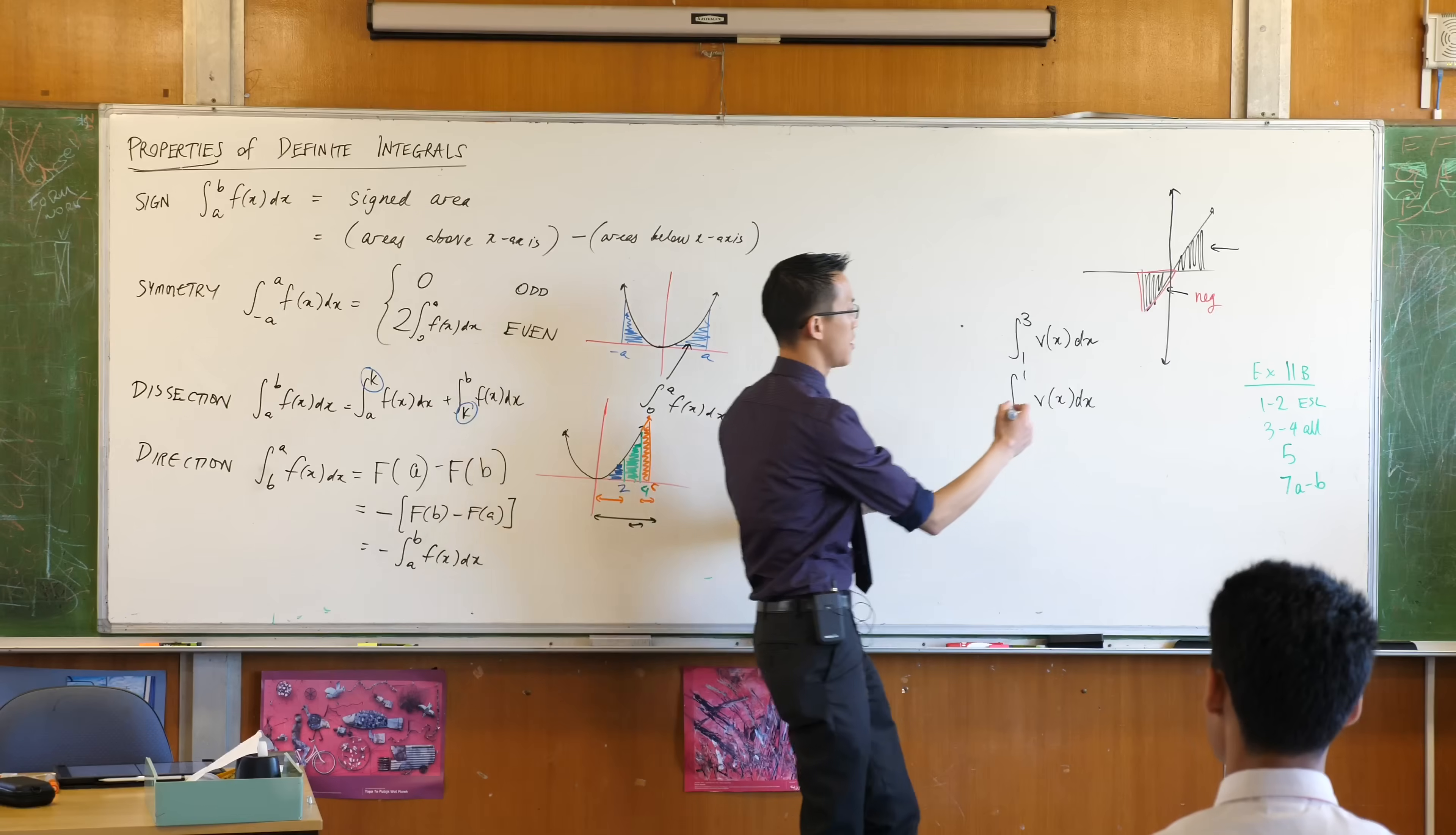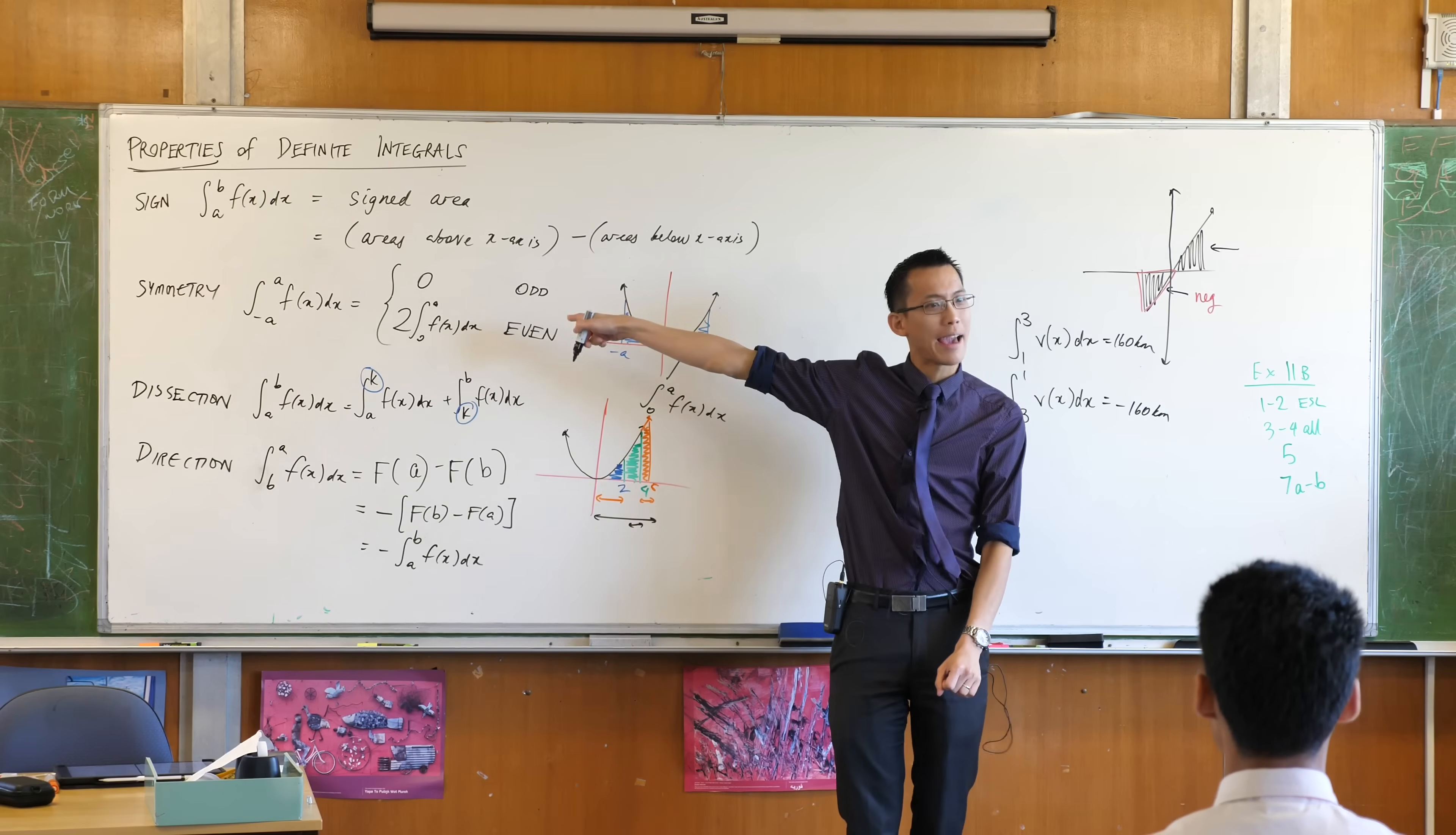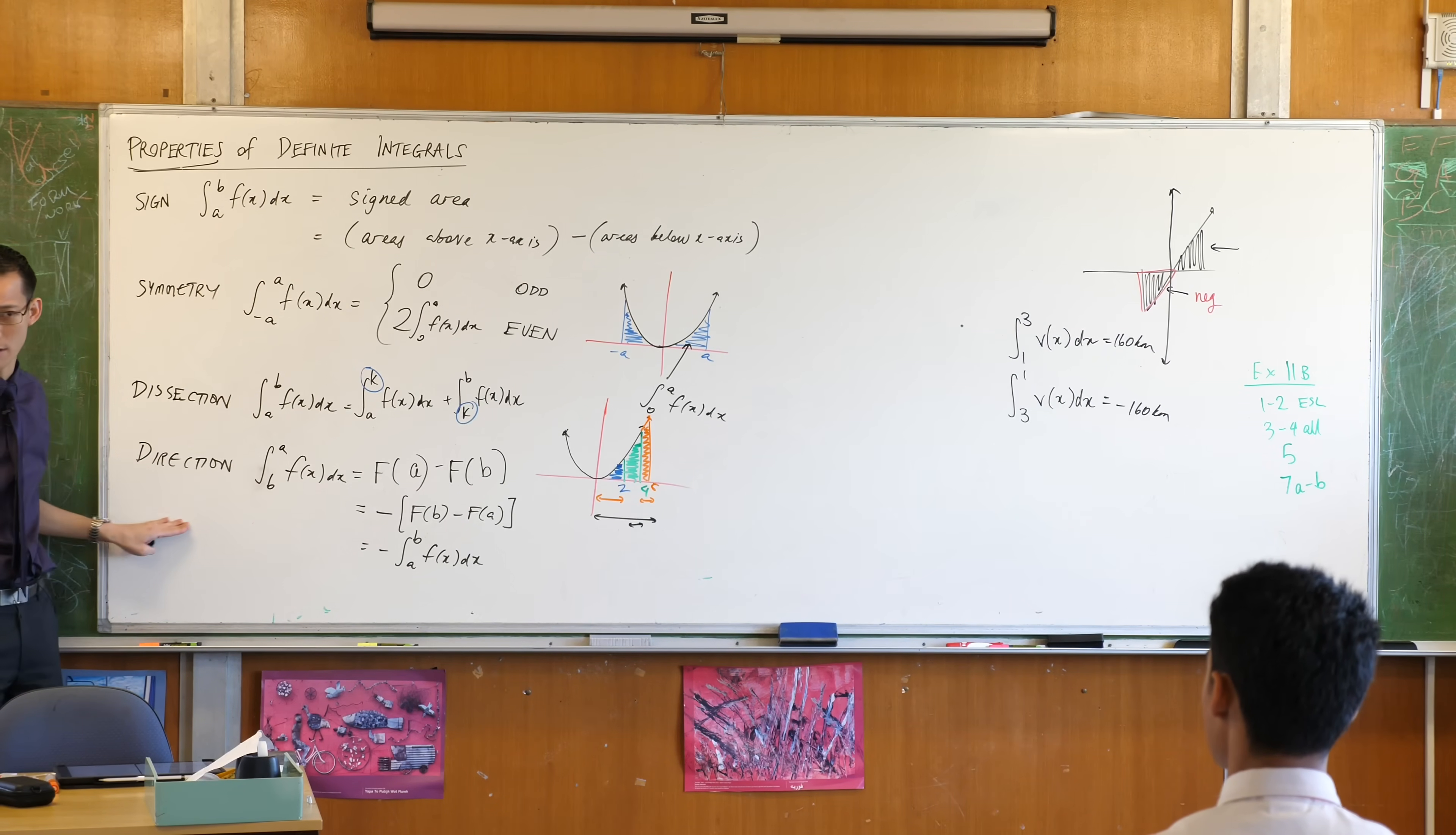Well, you're not going to be 160 kilometers forward. You're going to be 160 kilometers behind because you've just traveled back in time. Does that make sense? So actually we need this idea of negativeness, not just here with signed areas, but also here with the direction that you integrate in.